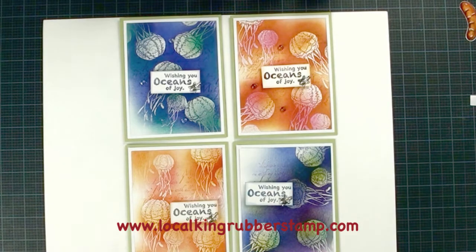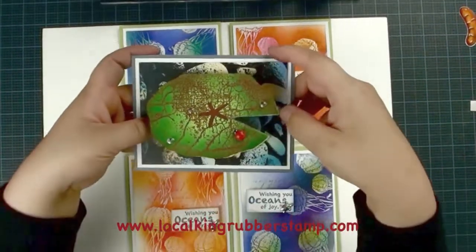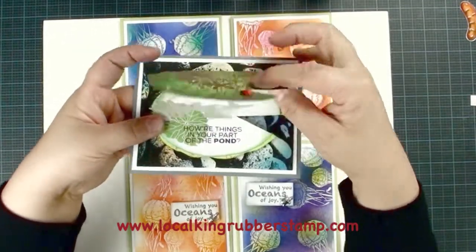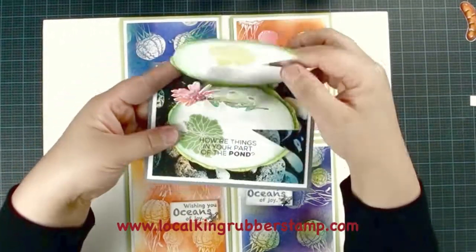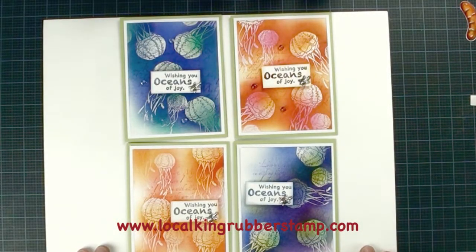A little preview for my next tutorial. This is going to be the next tutorial. Isn't that cute? Thank you for watching. This is Lisa from Local King Rubber Stamps. See you next time.